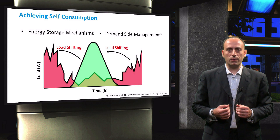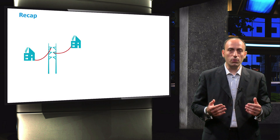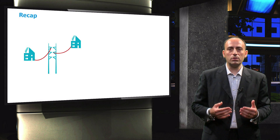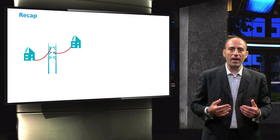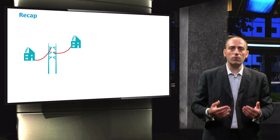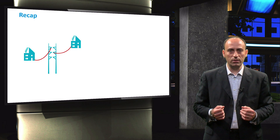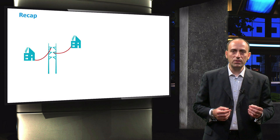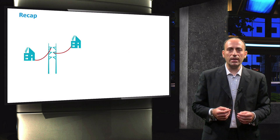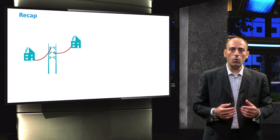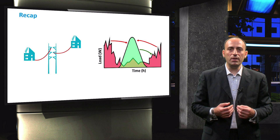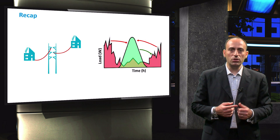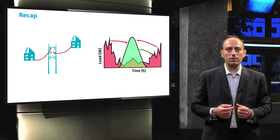To conclude, in this video we looked into the concept of self-consumption in grid-connected PV systems. Self-consumption mechanisms will reduce the amount of electricity instantaneously injected into the grid. If a PV system is properly designed, self-consumption can ease the planning and operation of the distribution grids. Moreover, we discussed that the penetration of self-consumption can be increased via two mechanisms, which are energy storage and demand-side management.